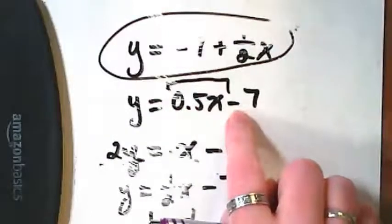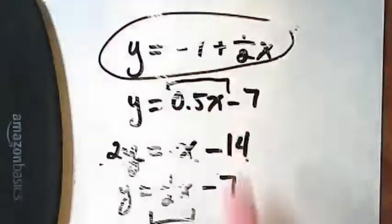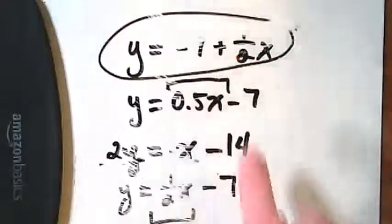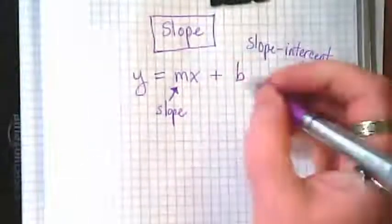What did this minus 7 tell us, though? It was telling us where that airplane was on that axis when we were going up and down, right? It was at minus 7. That's because this is what we call the y-intercept.